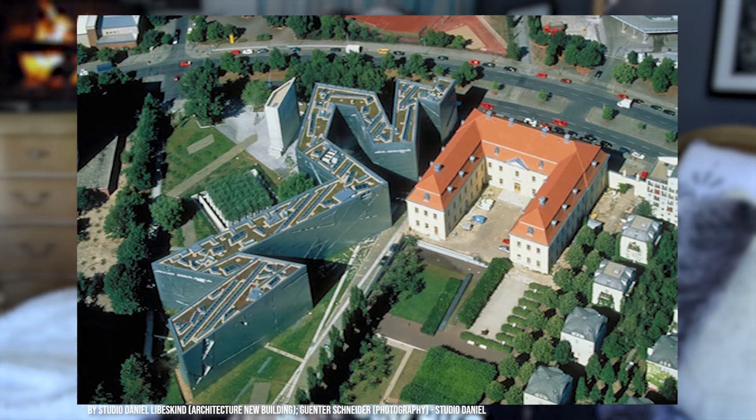Going back to Libeskind's building, his concept is really bringing visitors along a progression and timeline of historical events by expressing what it felt like through architecture — experiencing traditional Jewish life before, during, and after the Holocaust. His concept wasn't simply deconstructing the Star of David for form. The actual concept was bringing people on a journey and having the architectural expression elicit explicit feelings from occupants to relate to what people actually went through.